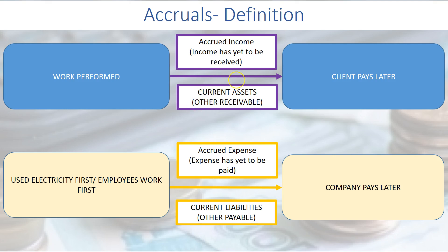Income that has not yet been received is considered under current assets, or to be more precise, it is under other receivable.